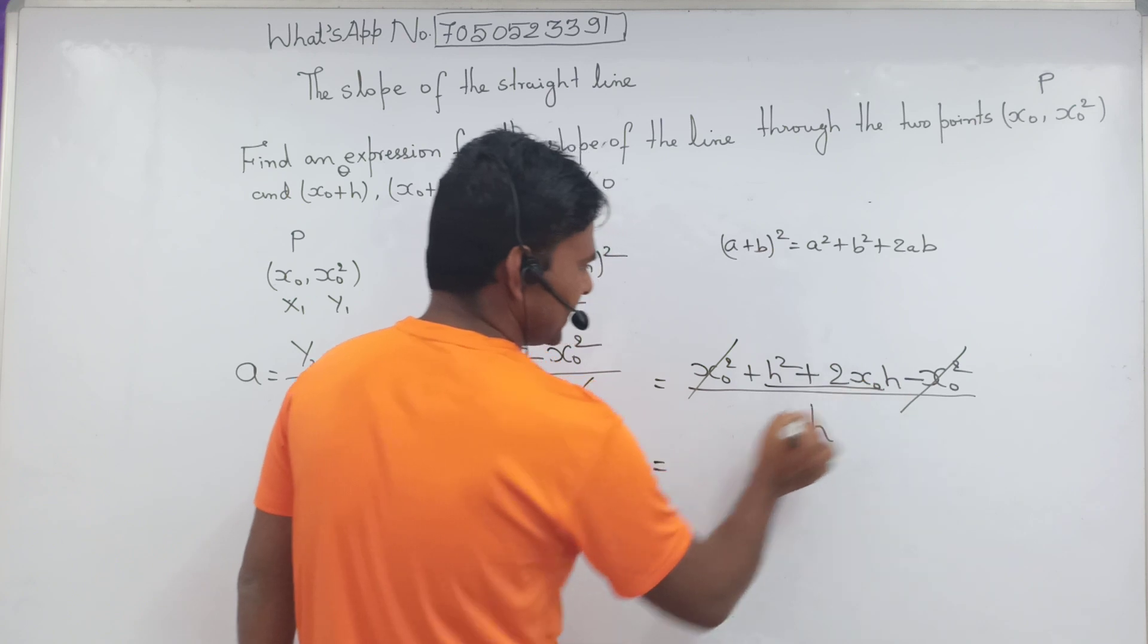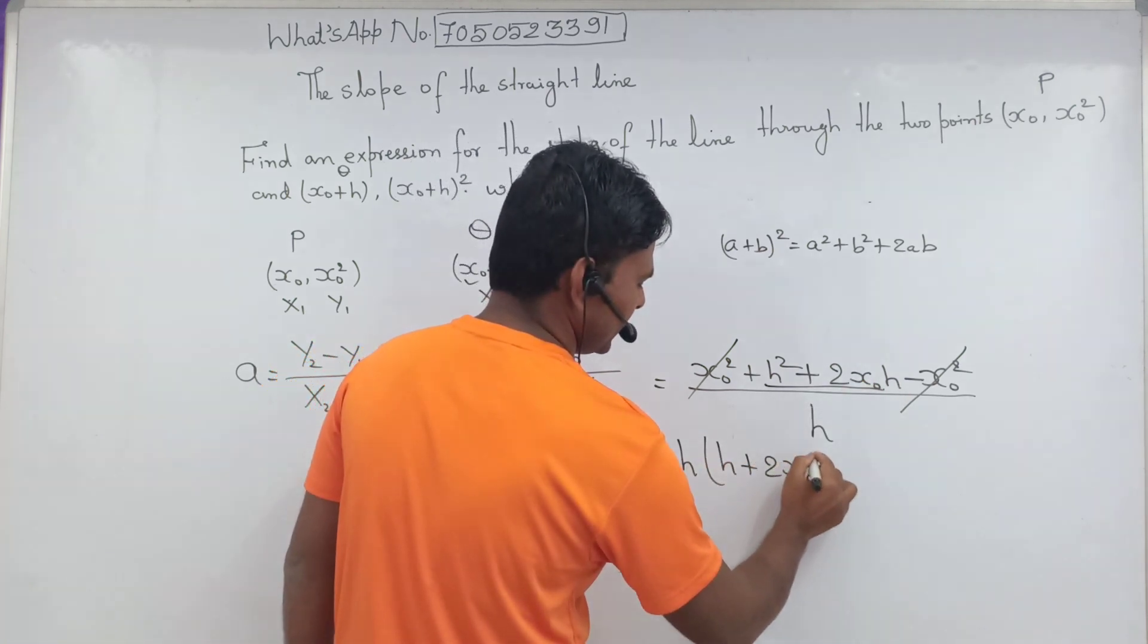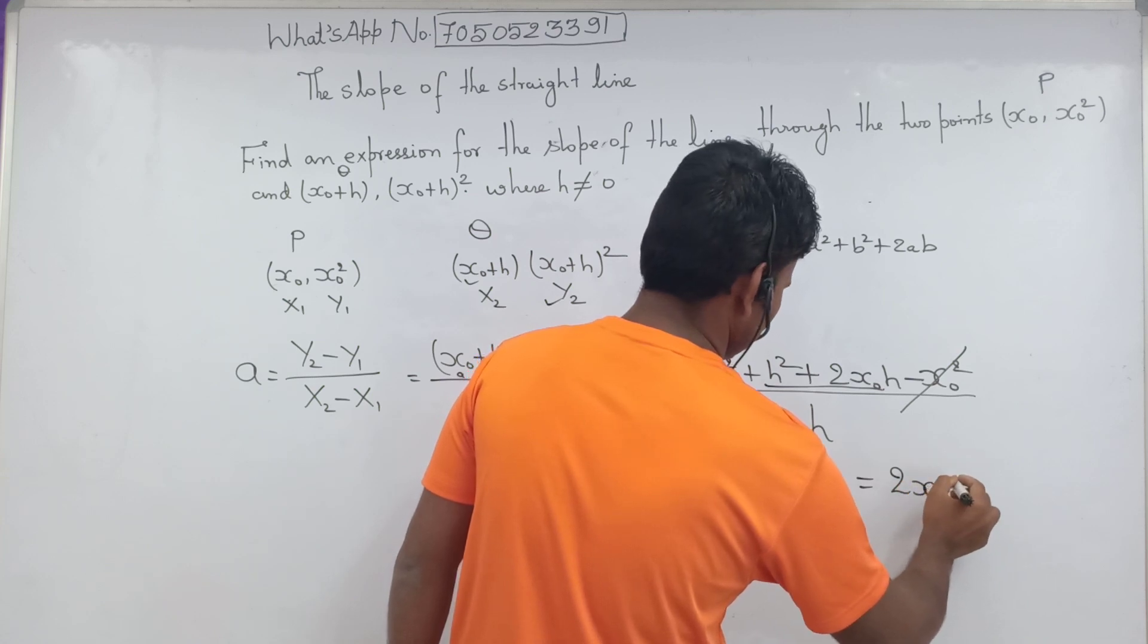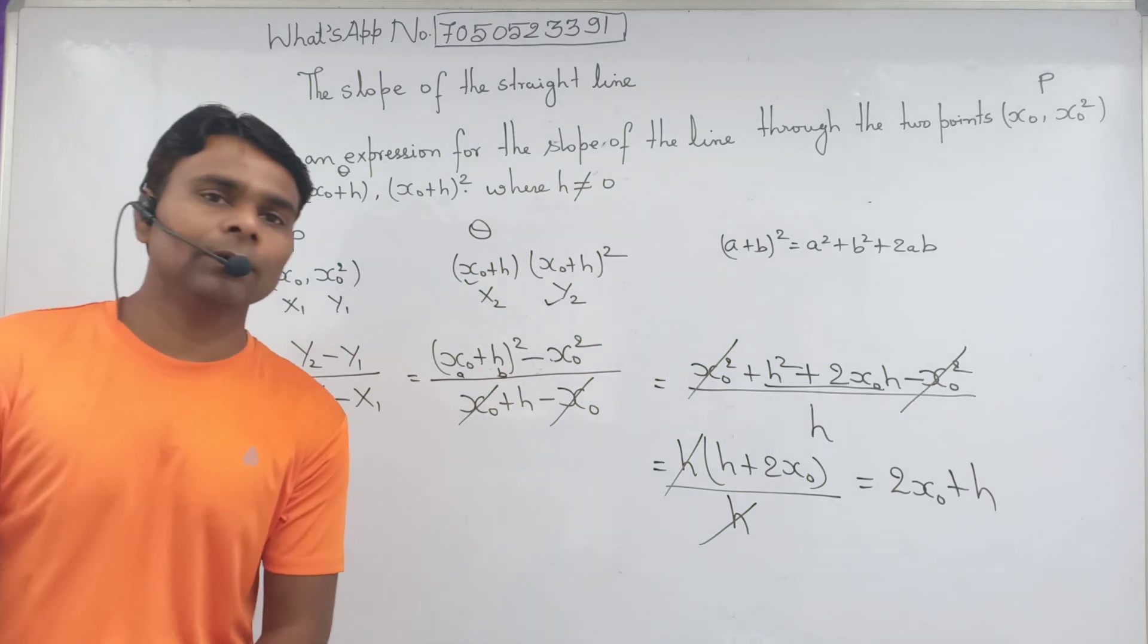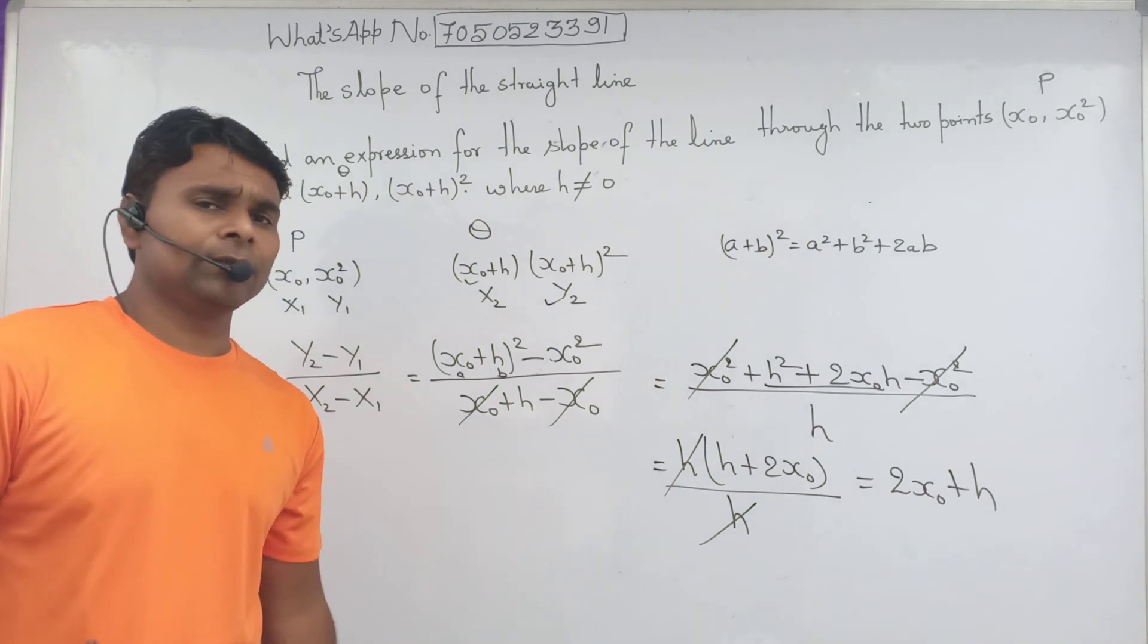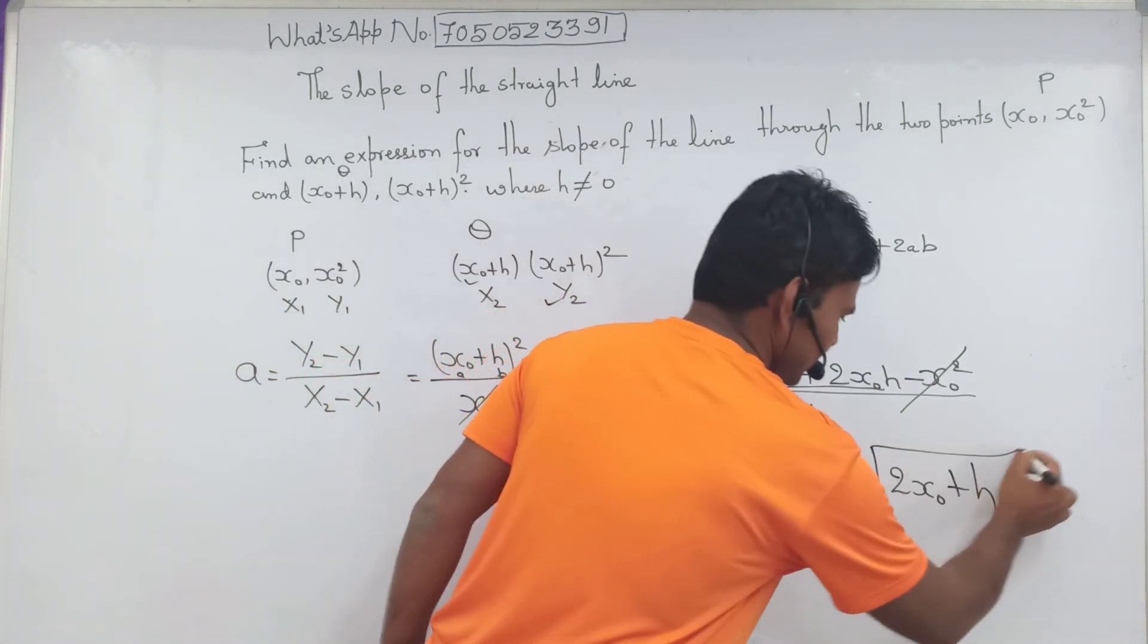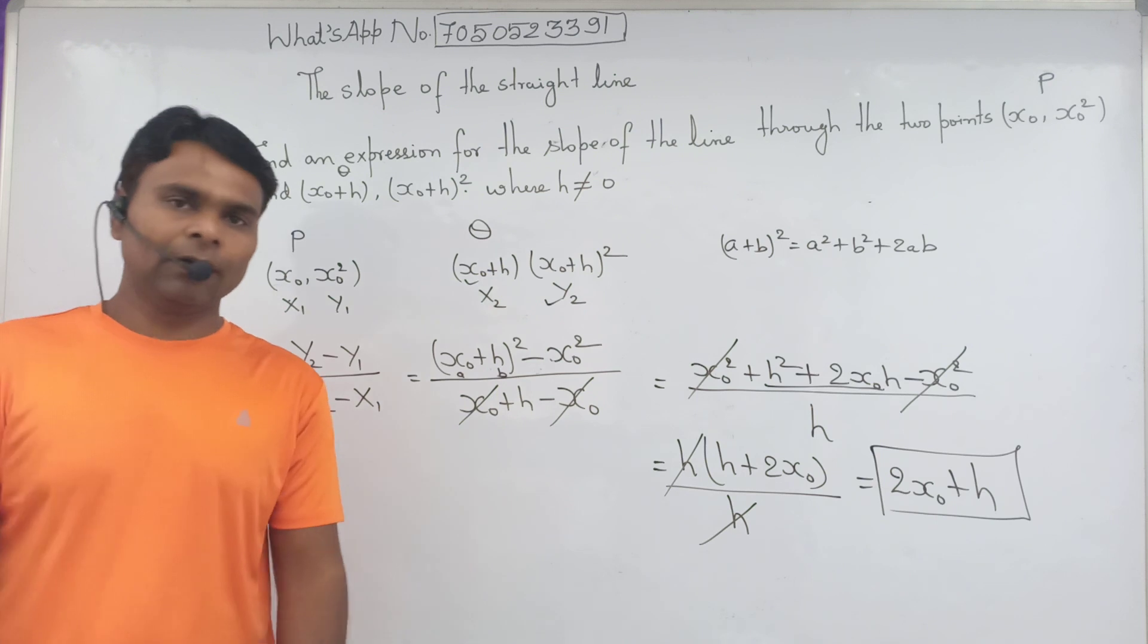Take h as a common: h times h plus 2x0 by h. h cancels, equal to 2x0 plus h. This is the expression for the slope of line through the two points x0, x0 square and x0 plus h, x0 plus h of all square, where h doesn't equal to 0. This is the expression we got, and I hope everybody got the concept I wanted to teach under this video.